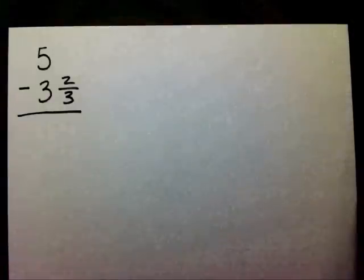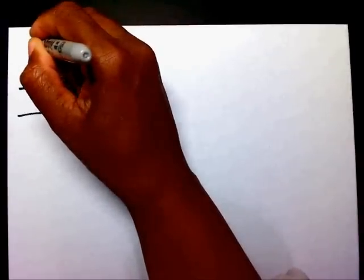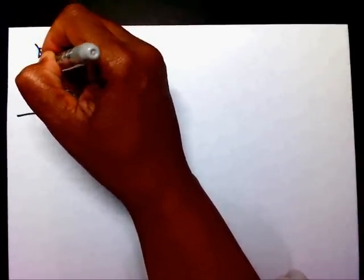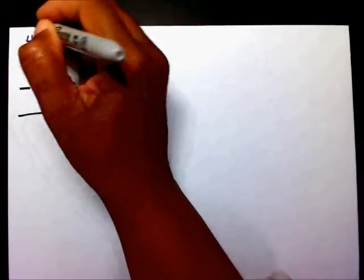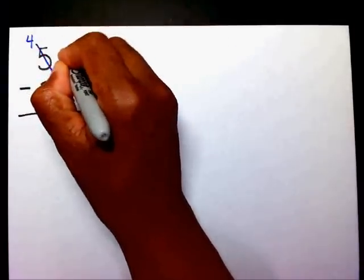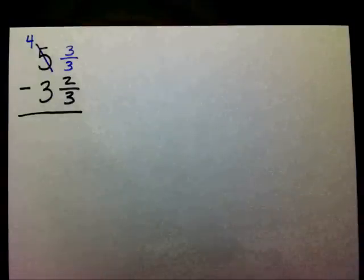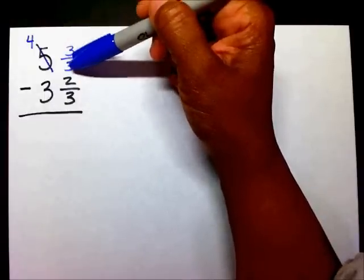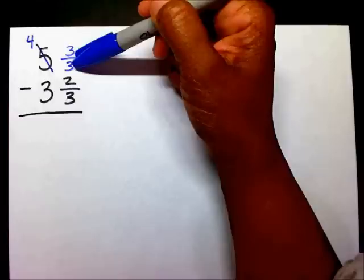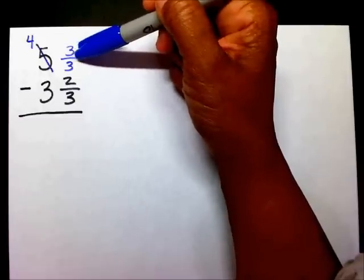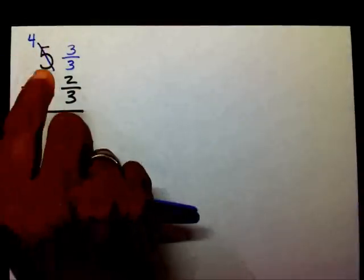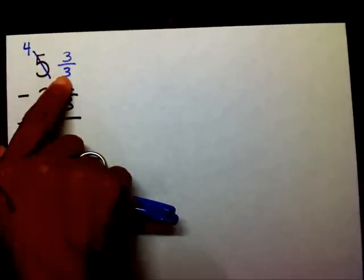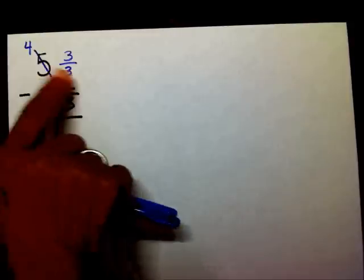So, what I need to do, I need to go over here to this five, and I need to borrow a one. So, the five will become a four, and the one that I'm going to pick is 3/3. Now, we know that 3/3 equals one. Any number that appears in a numerator and denominator that's the same equals one. So, I still have my five up here. It just looks different. I have my four, and my one still makes five.